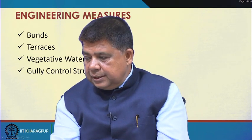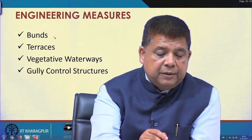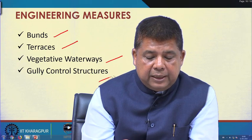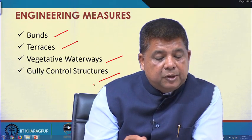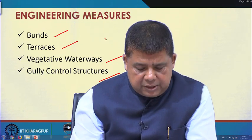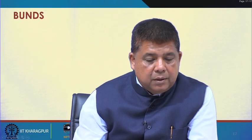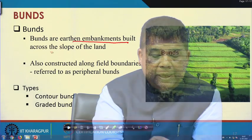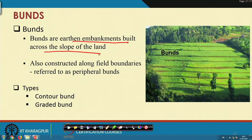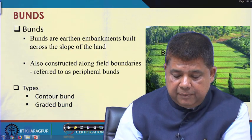Coming to engineering measures, there are 4 types normally adopted: bunds, terraces, vegetative waterways, and gully control structures — and at least one full week will be spent on each. Bunds are embankments built across the slope of the land. They are also found along field boundaries as peripheral bunds. Two types commonly used for water erosion control are contour bunds and graded bunds, and week 3 will be spent discussing bunds and how to design them.